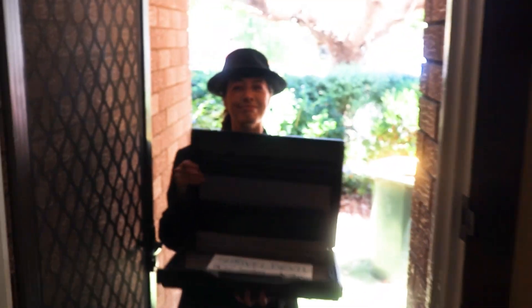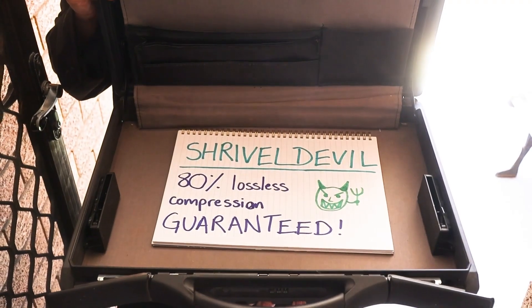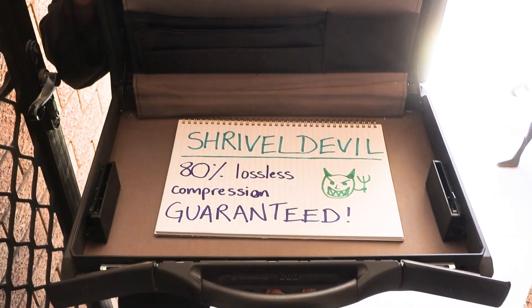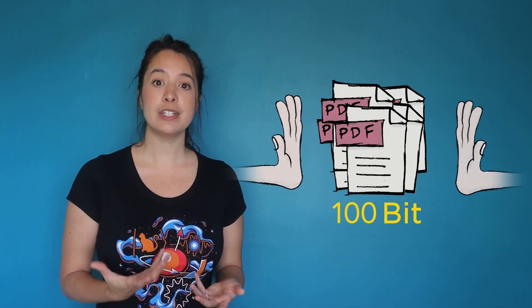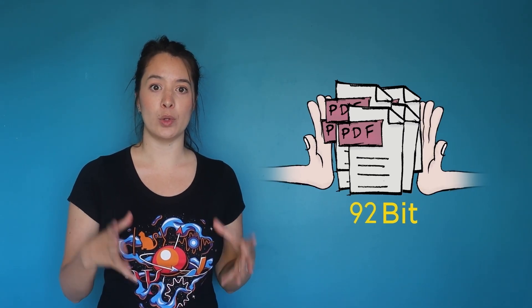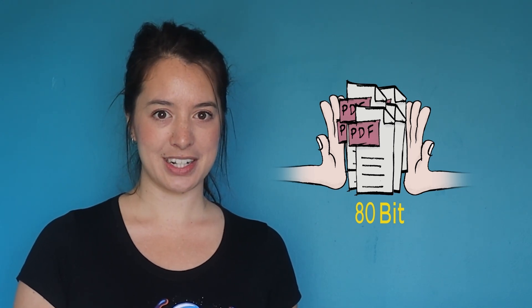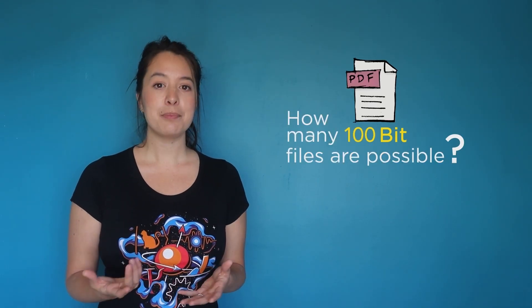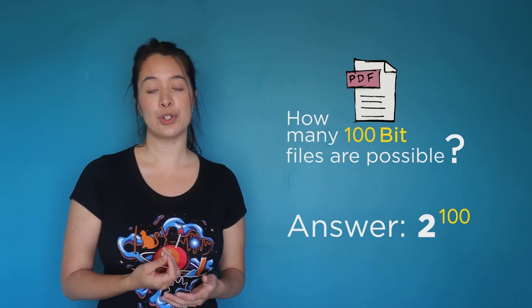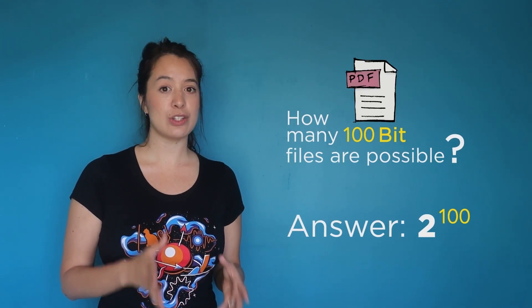Imagine a company claims that their new program, Shrivel Devil, can compress any file to 80% of its original size and then decompress it back to the original file. You've got a bunch of ebooks that are 100-bit files, so Shrivel Devil claims to be able to compress them all into 80-bit files. It doesn't sound so far-fetched, but here we invoke the pigeonhole principle. First, let's ask: how many 100-bit files can we possibly have? A simple calculation shows that we can have 2 to the power of 100 of them.